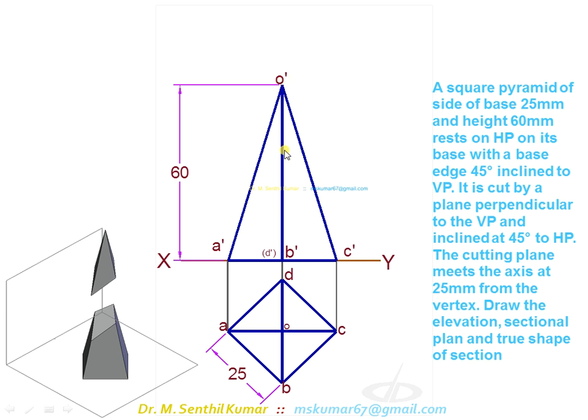From o' mark 25mm first. Through this you draw a 45 degree line. Now it cuts all the four slant edges, so there are four cutting points. Mark the notation 1', 2', 3', 4'. This 4' is on o'd'. Now darken the portion remaining. Leave this portion as thin, light and thin because it is assumed to be removed.